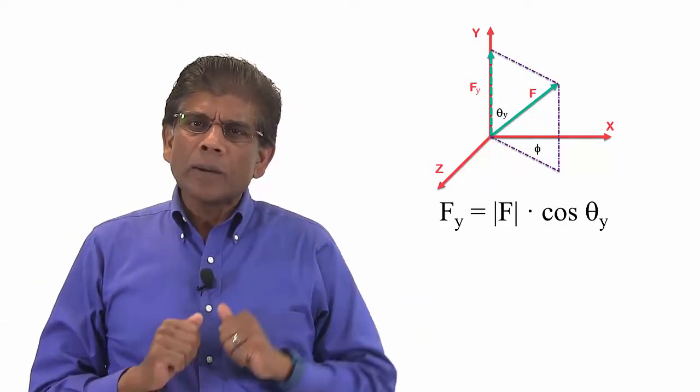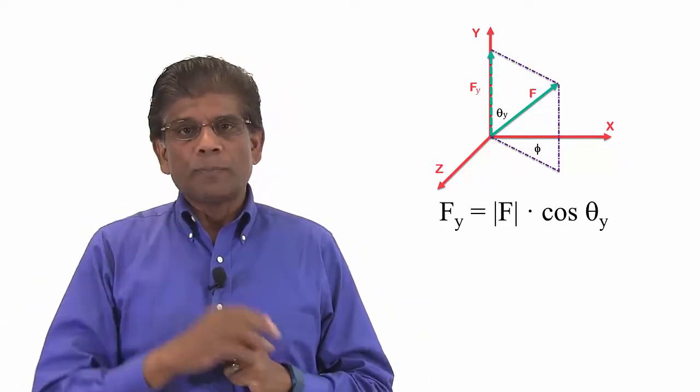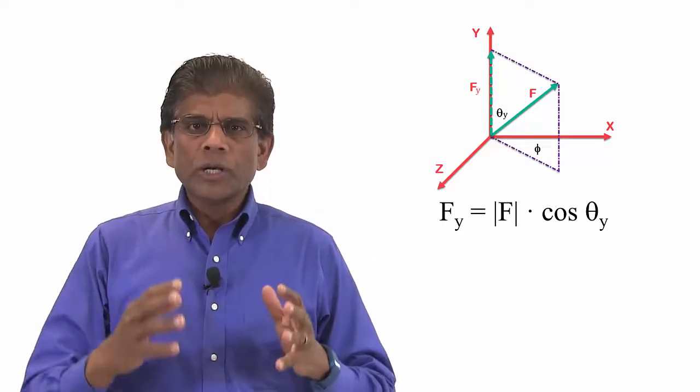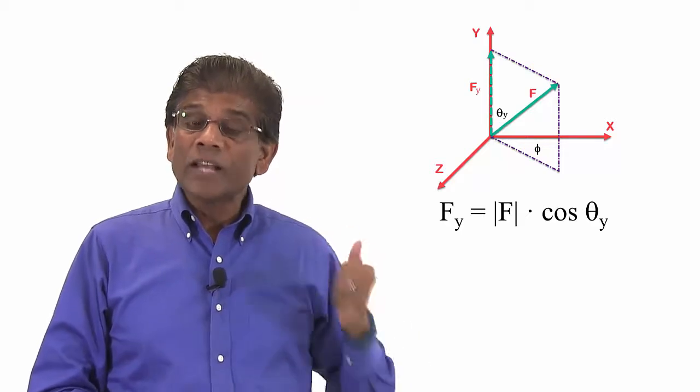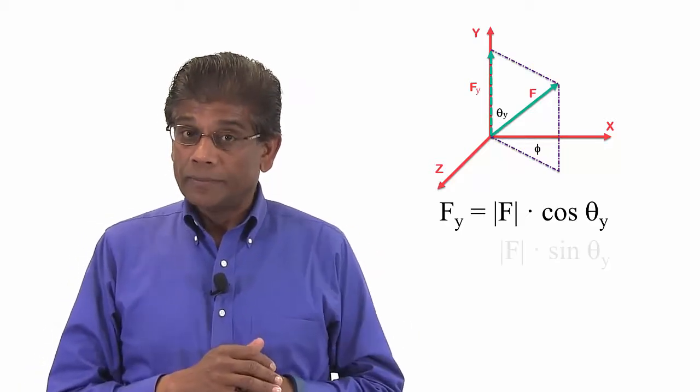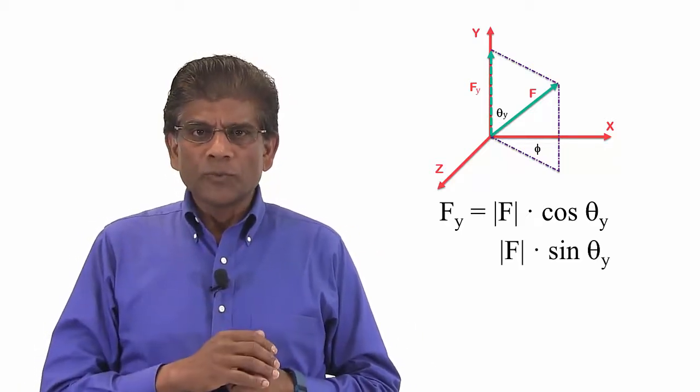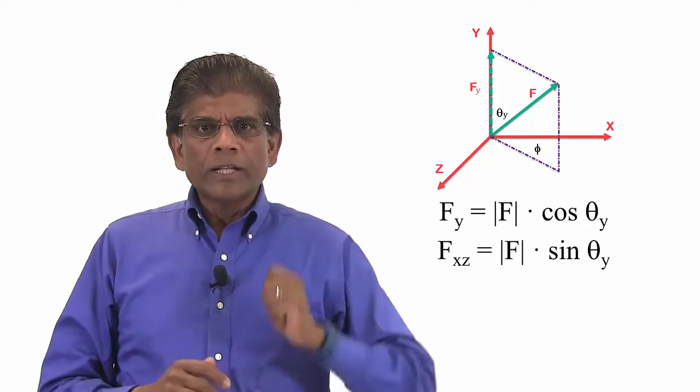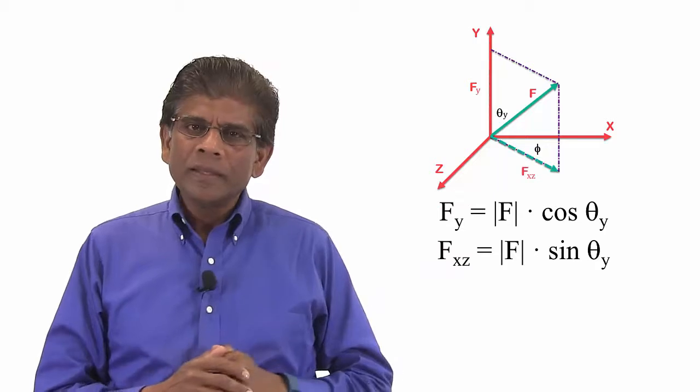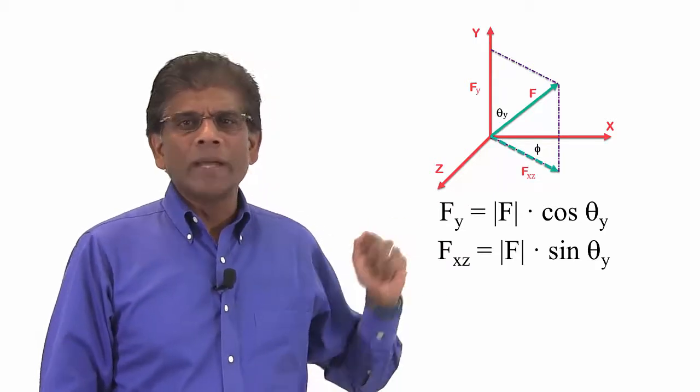Finding the x-z component of the force is a two-step process. First, we find the projection of the force on the x-z plane using the sine value of the angle theta. Let's call this component of this force as F sub xz and its magnitude is shown here. This is actually an intermediate value.